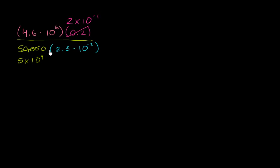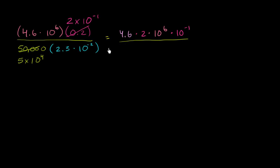Now let's take the product of the numerator and denominator. In the numerator, I'm going to swap the order of multiplication: 4.6 times 10 to the sixth, times 2 times 10 to the negative 1. I can rewrite this as 4.6 times 2, times 10 to the sixth, times 10 to the negative 1. In the denominator, I have 5 times 2.3, times 10 to the fourth, times 10 to the negative 2.